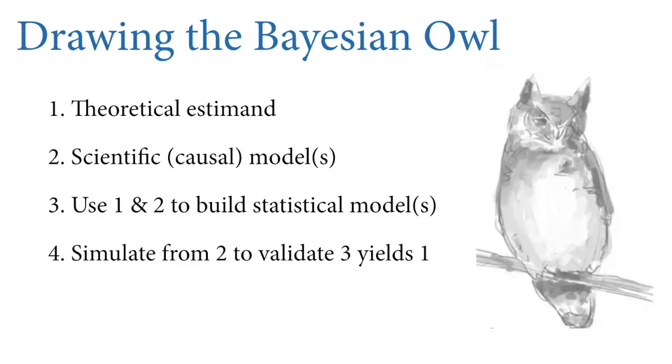Step four, we simulate from step two, the scientific models, to validate that number three, our statistical model, works. This is a way of checking to justify our workflow so our colleagues can believe that our software works. This is also good for your own peace of mind. Most of the models in this course are not so complicated that step four is strictly necessary, but I'll show you examples because I think it's something I can teach you to do that you'll be glad you learned.